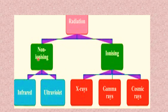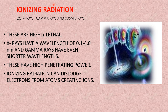Non-ionizing radiation consists of UV and infrared rays, while ionizing radiation includes x-rays, gamma rays, and cosmic rays. X-rays, gamma rays, and cosmic rays are highly lethal — they cause very dangerous mutations in organisms or cells, leading to death of the organism, which is the goal of sterilization. X-rays have a wavelength of 0.1 to 4 nanometers, and gamma rays have even shorter wavelengths.